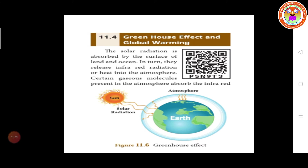Certain gas molecules present in the atmosphere absorb the infrared ray or heat and emit it into the earth. The solar radiation is absorbed by the surface of land and the ocean. In turn, they release infrared radiation or heat into the atmosphere.